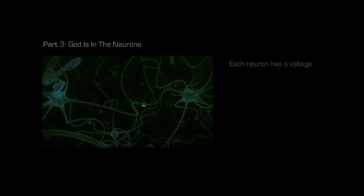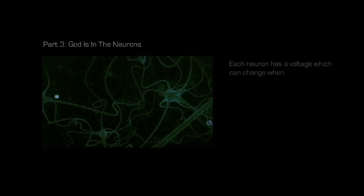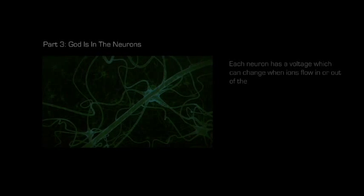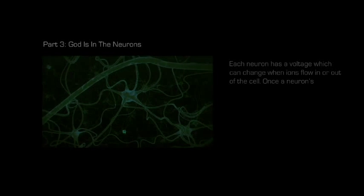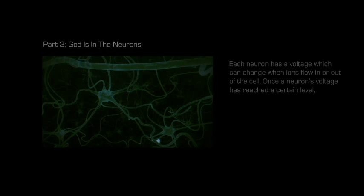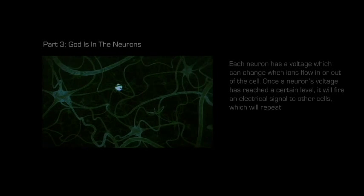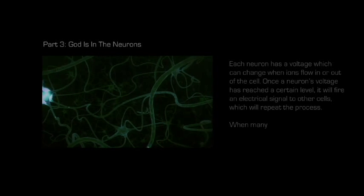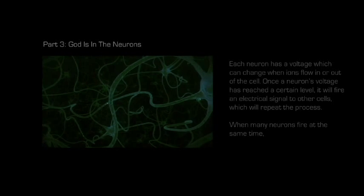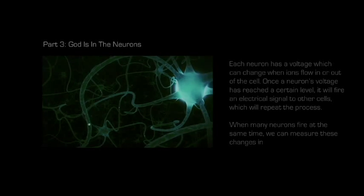Each neuron has a voltage, which can change when ions flow in or out of the cell. Once a neuron's voltage has reached a certain level, it will fire an electrical signal to other cells, which will repeat the process. When many neurons fire at the same time, we can measure these changes in the form of a wave.